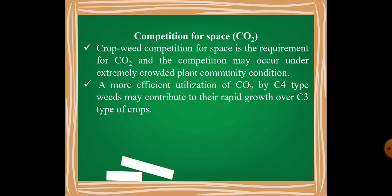C4 weeds can utilize CO₂ more efficiently even at low concentrations because of the enzyme PEP carboxylase, which has a very high affinity for CO₂. In contrast, C3 plants use Rubisco, which has affinity for both CO₂ and oxygen — so if atmospheric oxygen is high, Rubisco performs oxygenation instead of carboxylation. PEP carboxylase works efficiently even at low CO₂ concentrations, making C4 plants more competitive than C3 crops.